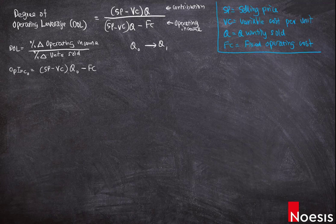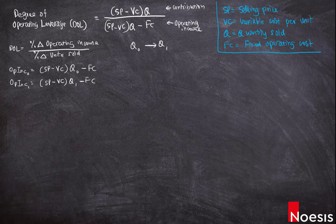If they were to increase sales to Q₁, the operating income would then increase to: selling price minus variable cost per unit, multiplied by Q₁, minus the fixed cost.